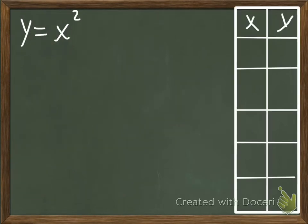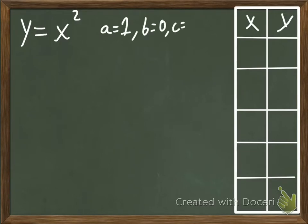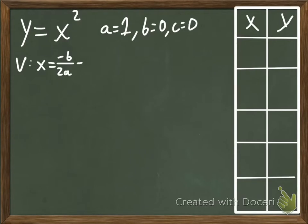It says y equals - we did that. Next, we're going to identify our a, b, and c. My a for this is 1. I don't have a b or c, so b equals 0 and c equals 0. Now we're going to find the vertex. To find the x point of the vertex, we do x equals the opposite of b over 2 times a. The opposite of 0 is 0, over 2 times 1. We know that 0 divided by anything is just 0, so we know at the center of our xy chart we're going to have a 0.